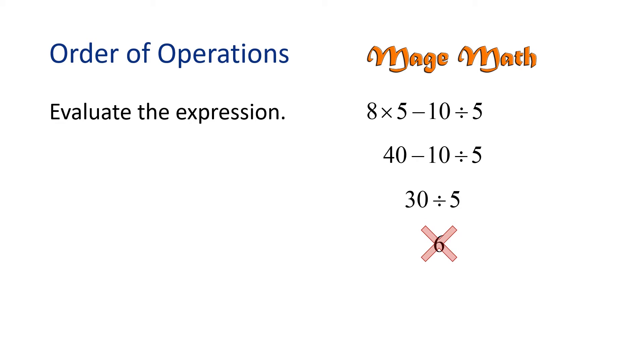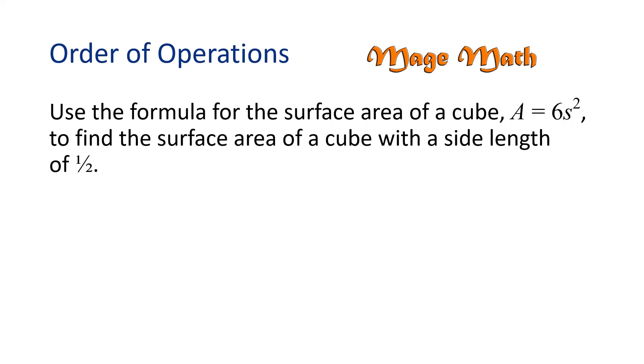Alright, let's try another problem. Use the formula for the surface area of a cube, A equals 6s squared, to find the surface area of a cube with a side length of 1 half. In this problem, we need to start by substituting 1 half into the formula for S. And then we're going to apply the order of operations.